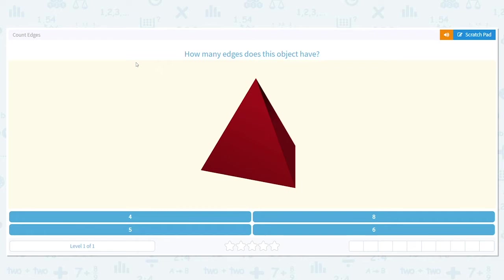Okay, so our first picture is a triangular pyramid. We want to know how many edges the object has. Edges are where two flat planes, two sides, meet.